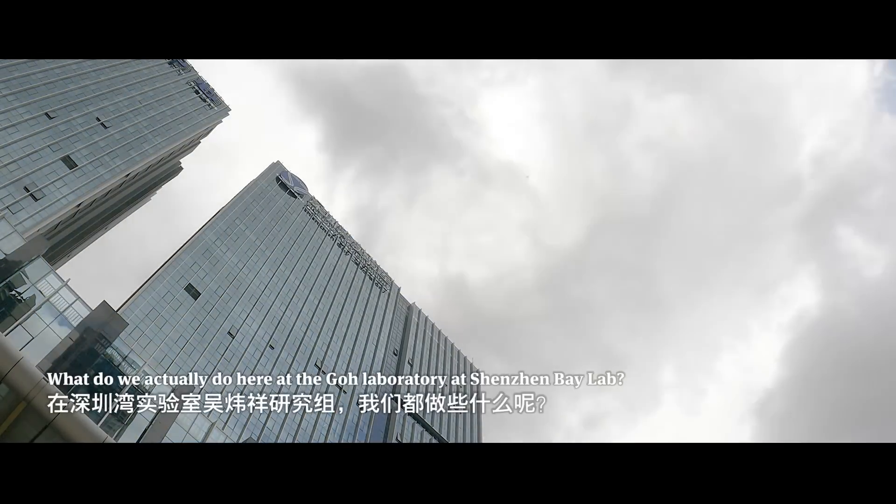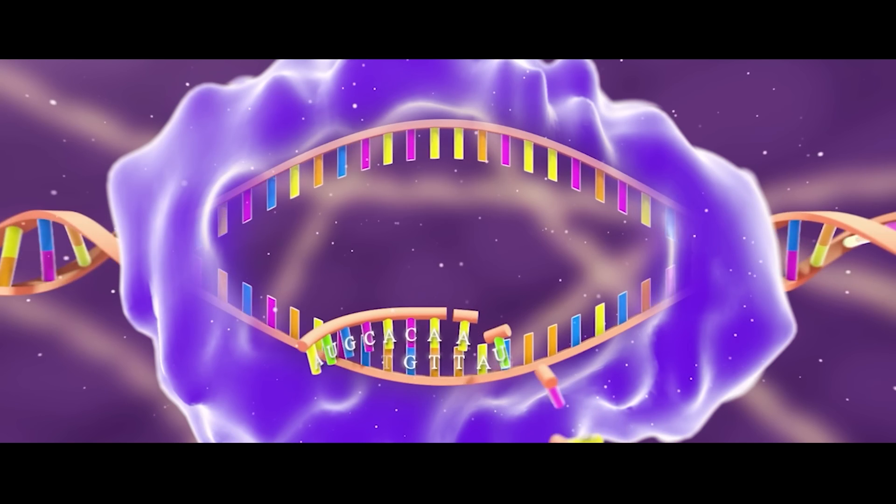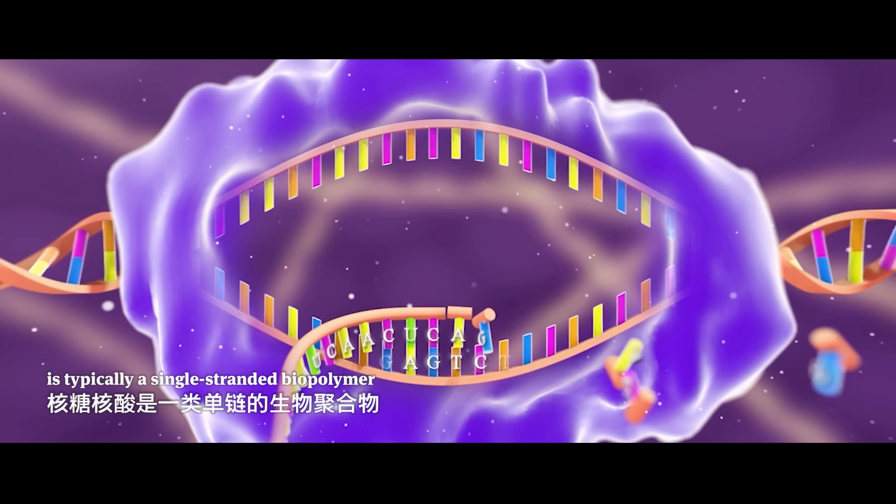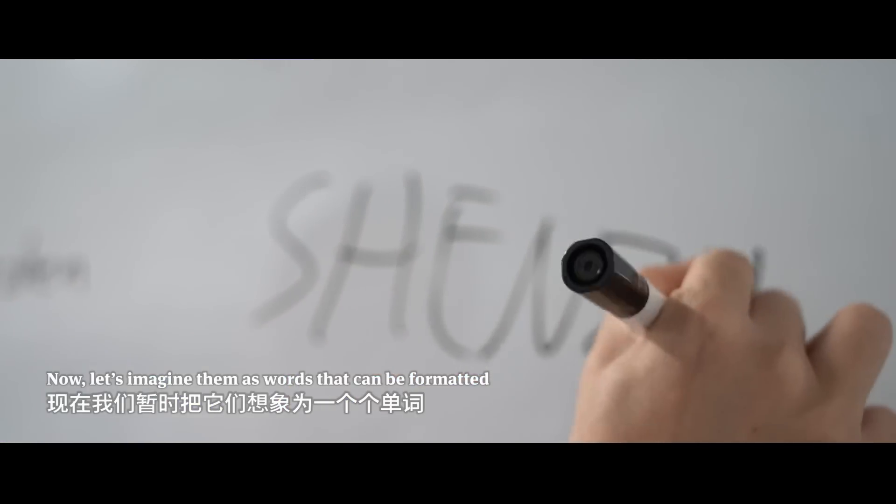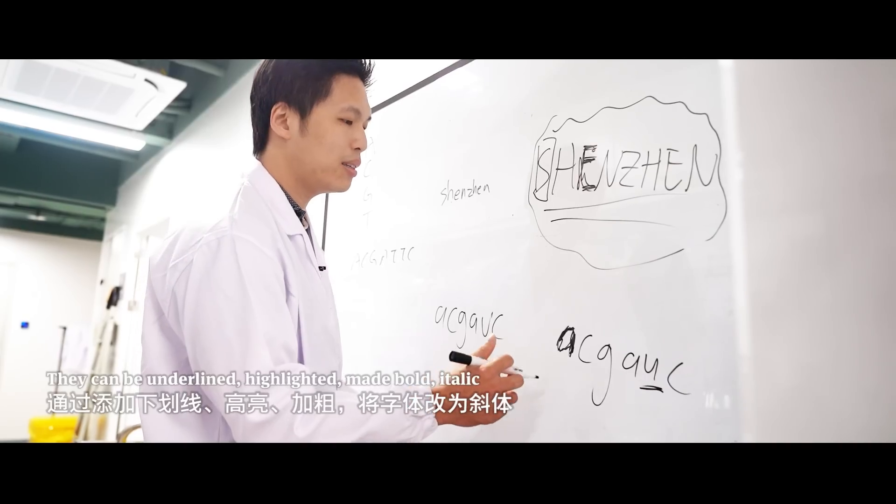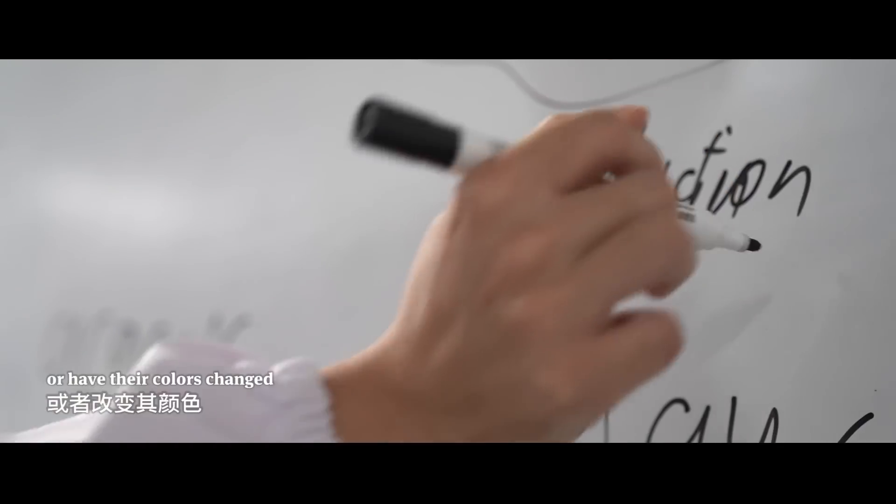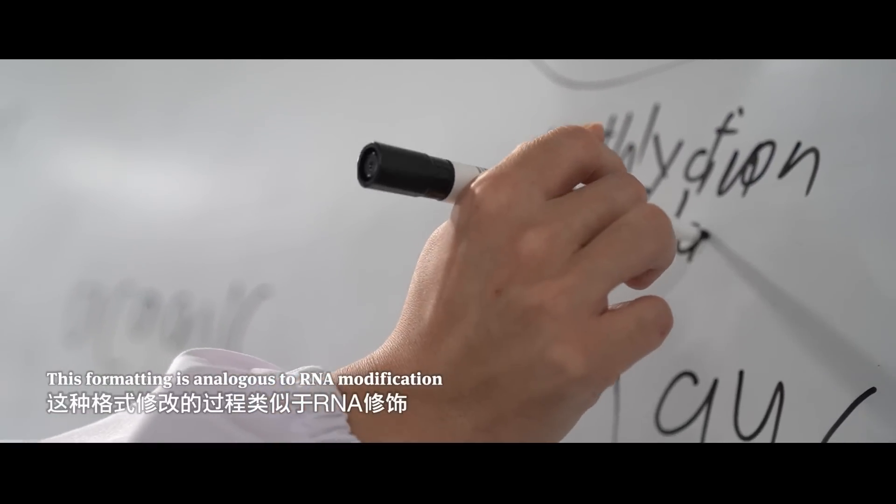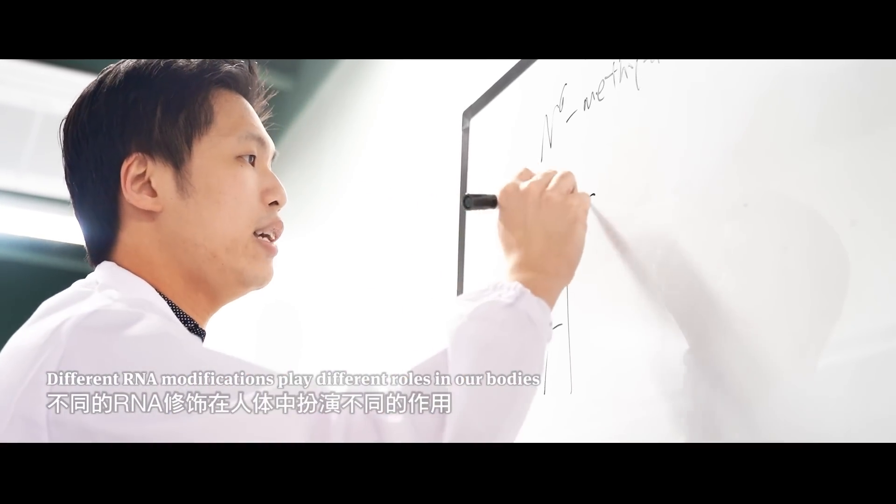What do we actually do here at the Go Laboratory at Shenzhen Bay Lab? We know that RNA, or ribonucleic acid, is typically a single-stranded biopolymer. Let's imagine them as words that can be formatted. They can be underlined, highlighted, made bold, italic, or have their colors changed. This formatting is analogous to RNA modification.